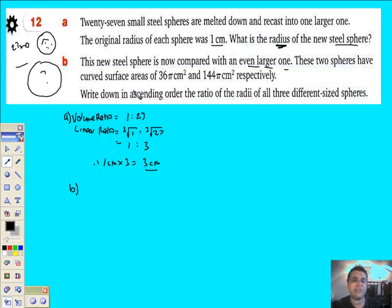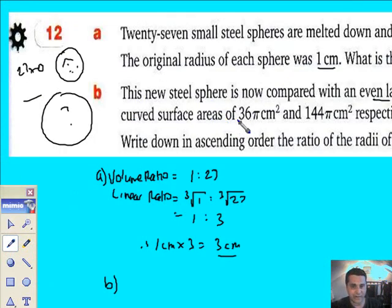The two spheres have curved surface areas of 36π and 144π respectively. In other words, that's got an area of 36π, that's got an area of 144π. I am being given an area ratio.